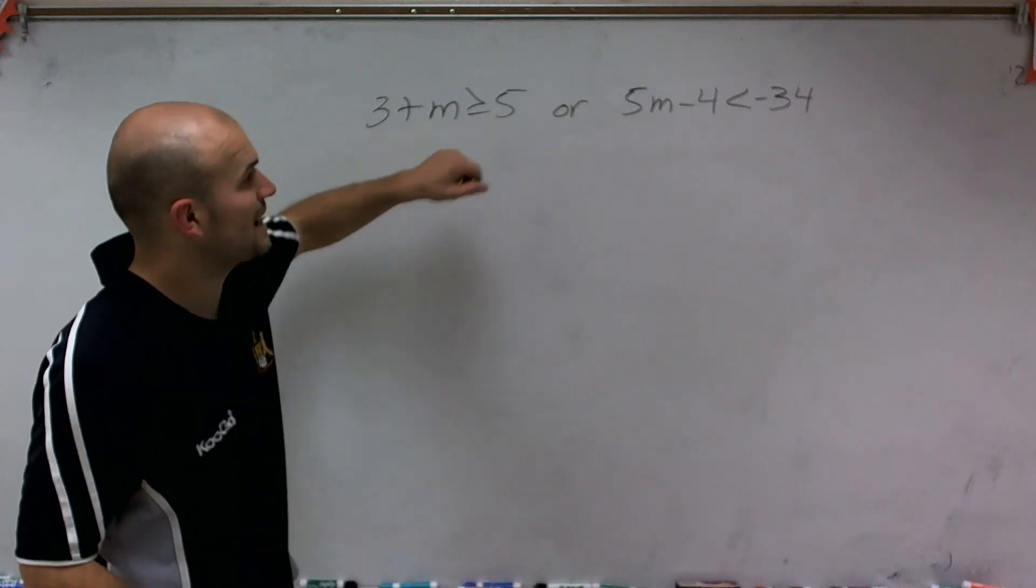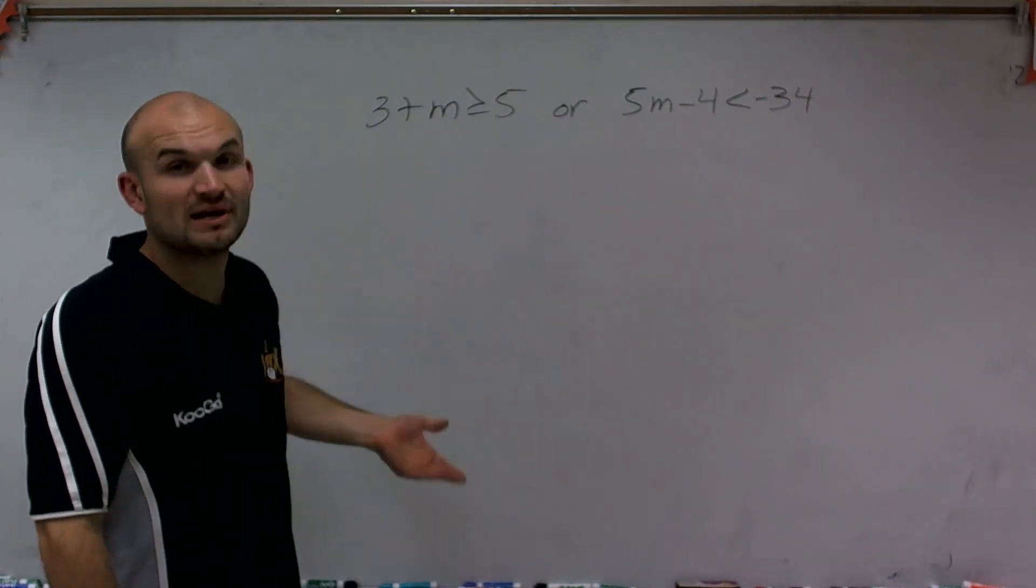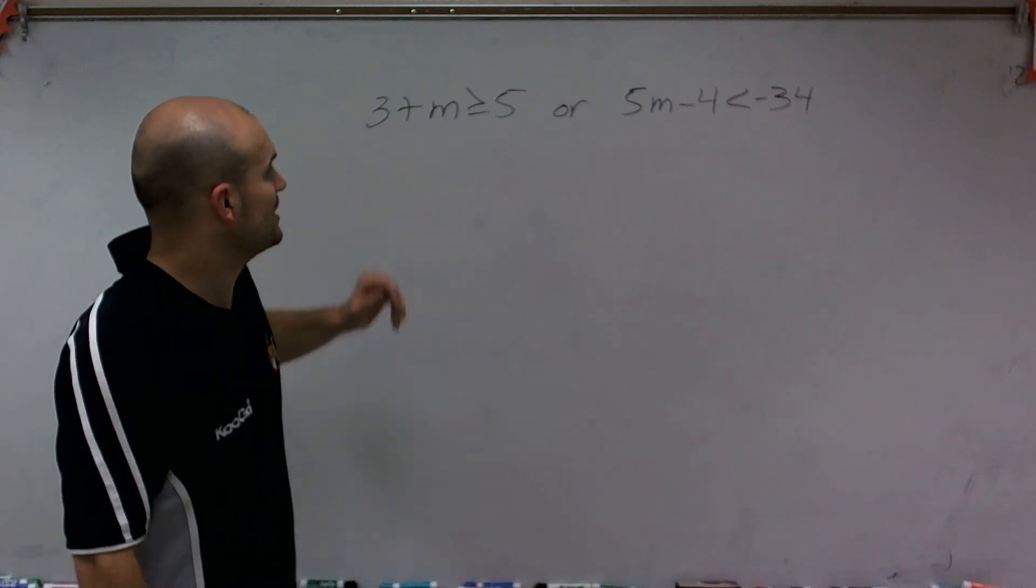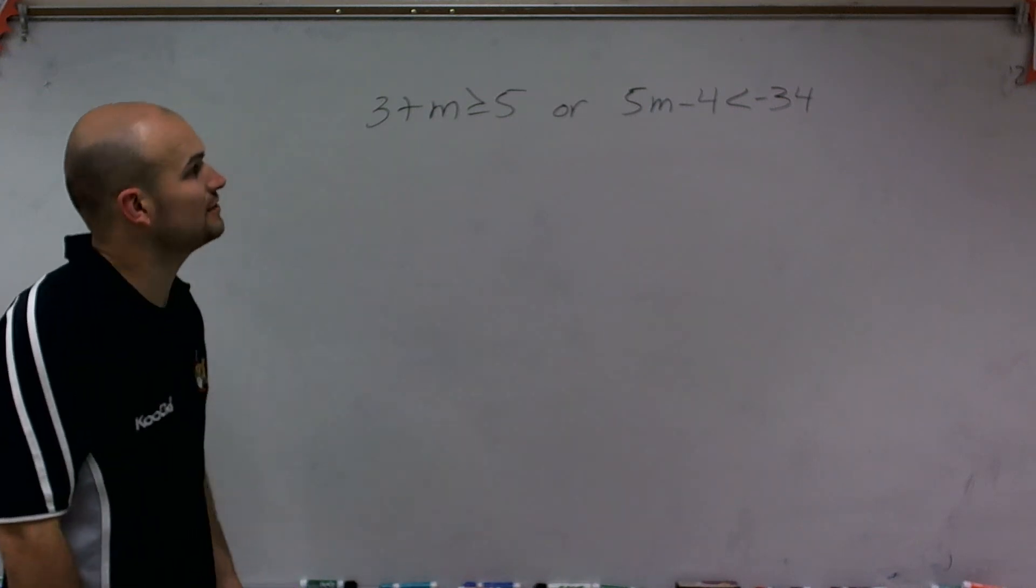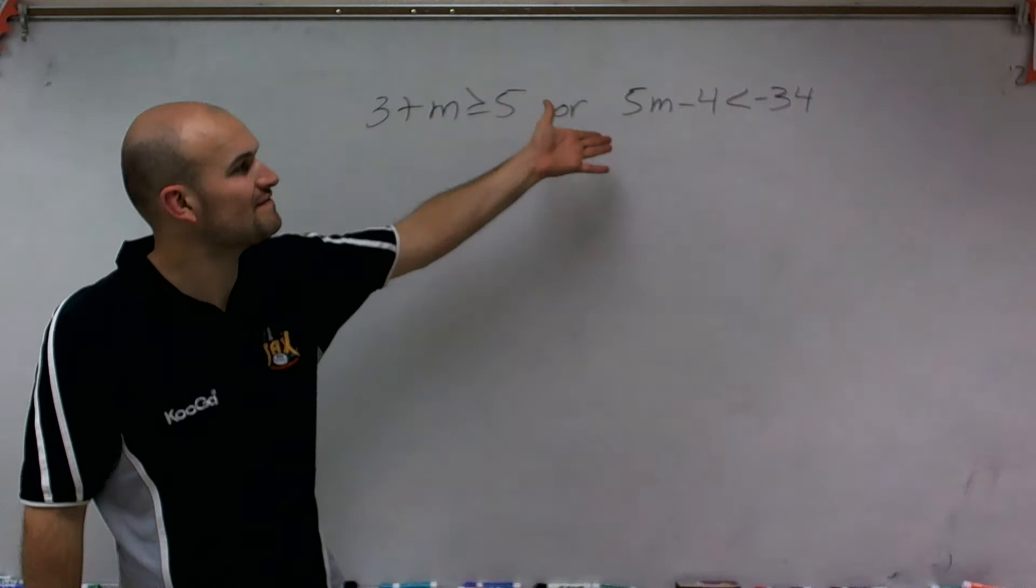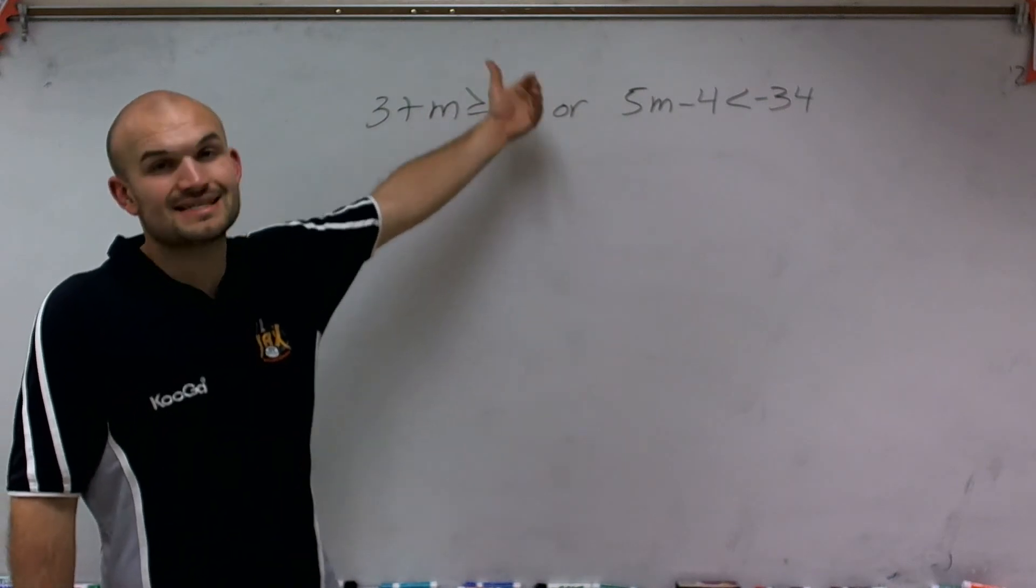Welcome. So what I'd like to do is show you how to solve and graph this compound inequality with the or statement. So what I have is 3 plus m is greater than or equal to 5, or 5m minus 4 is less than negative 34.